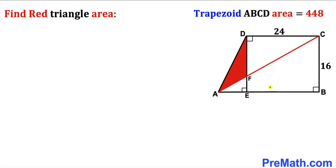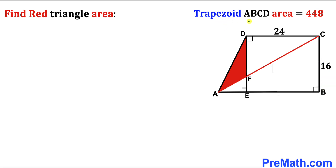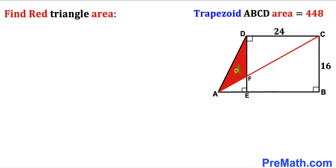In this video we have got this trapezoid ABCD as you can see in this diagram such that its side length CD is 24 units, its side length BC is 16, and moreover this trapezoid ABCD area is 448 unit square. Furthermore we have got this diagonal AC and as a result we get this red triangle AFD, and now our task is to calculate the area of this red shaded triangle AFD.